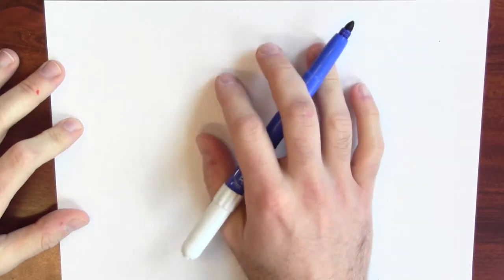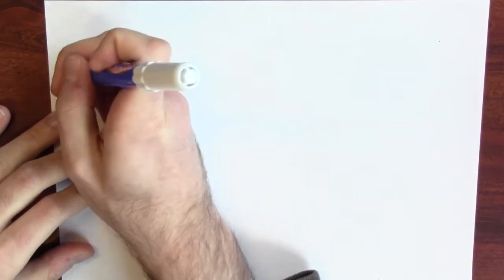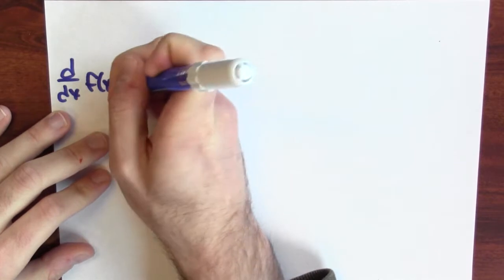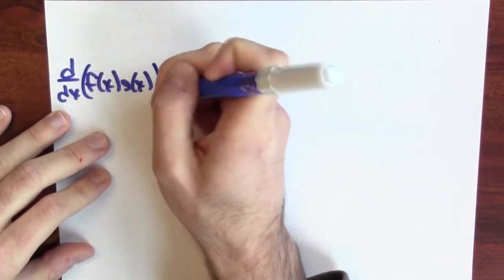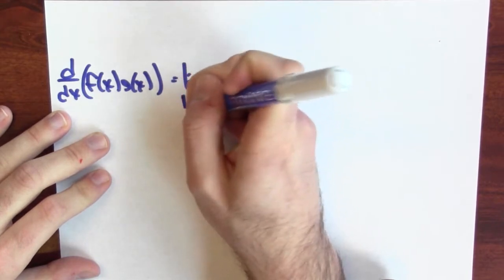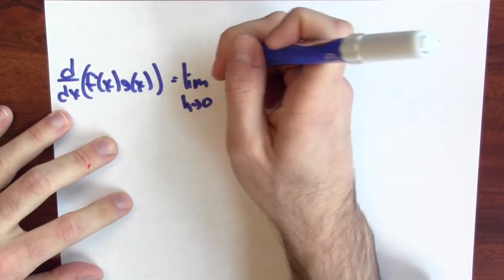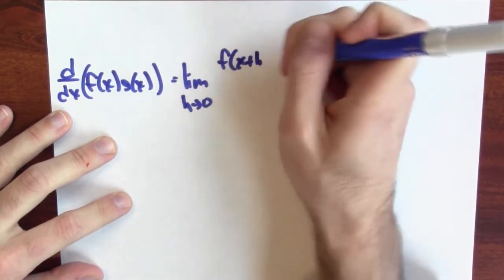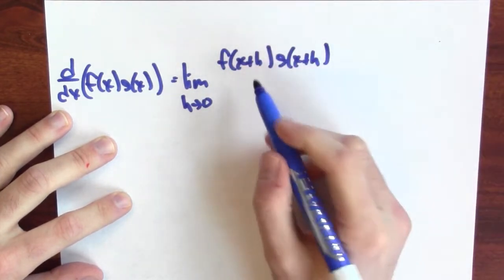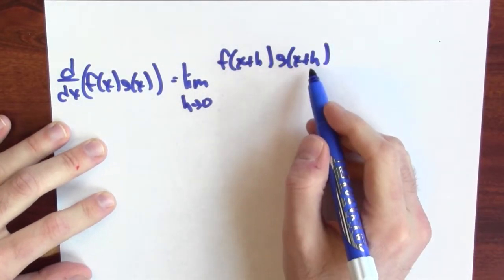We can derive the product rule by just going back to the definition of derivative. The derivative of the product of f(x) and g(x) is a limit — the limit as h approaches 0 of the function at x plus h, which in this case is the product of f and g both evaluated at x plus h.